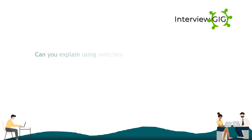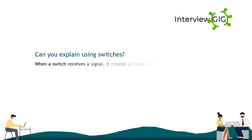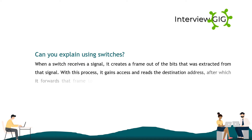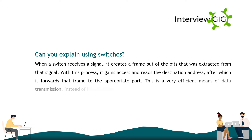Can you explain how switches work? When a switch receives a signal, it creates a frame out of the bits extracted from that signal. With this process it gains access and reads the destination address, after which it forwards that frame to the appropriate port. This is a very efficient means of data transmission instead of broadcasting it on all ports.